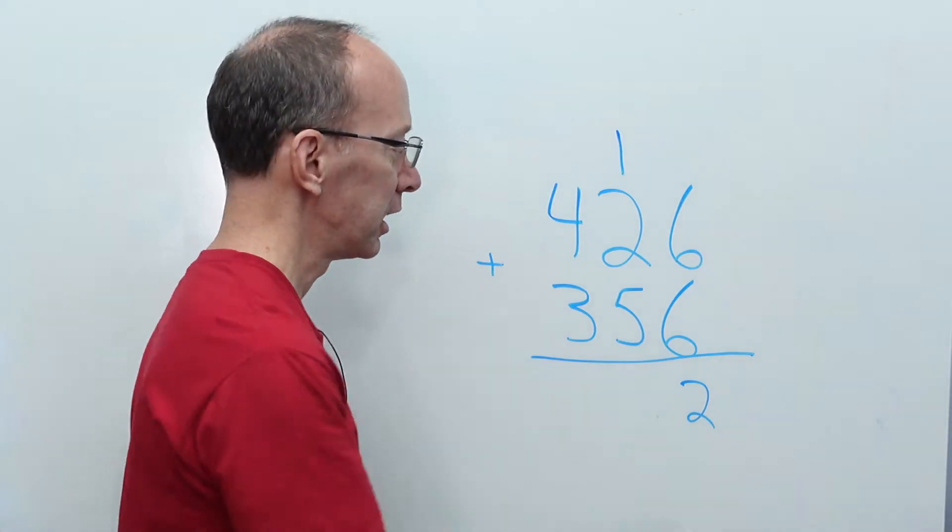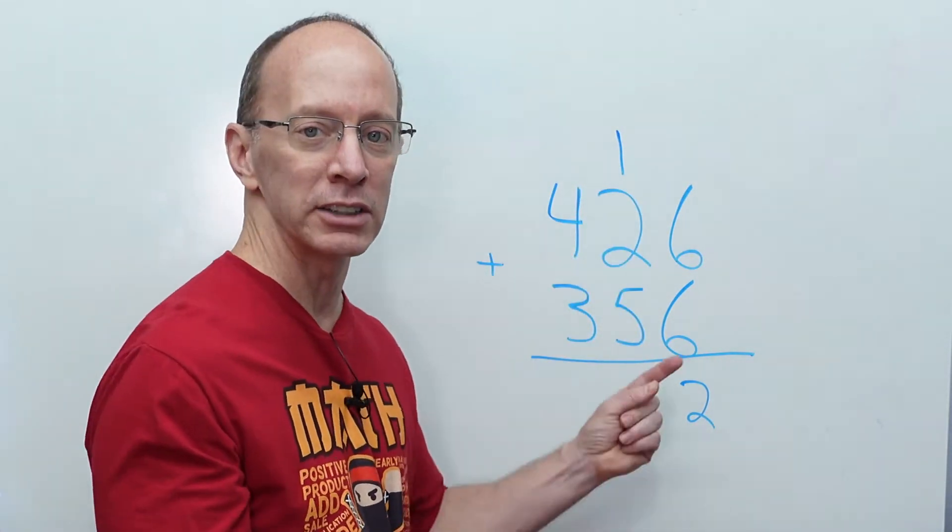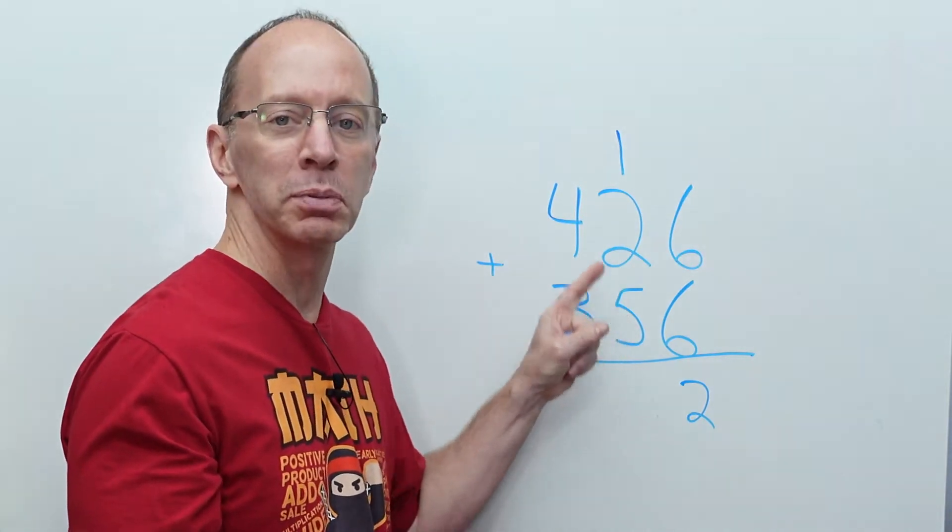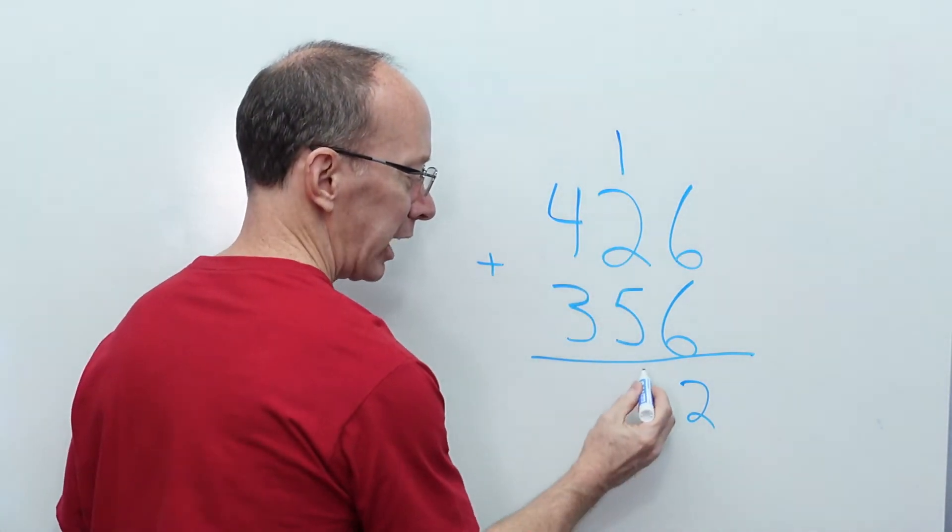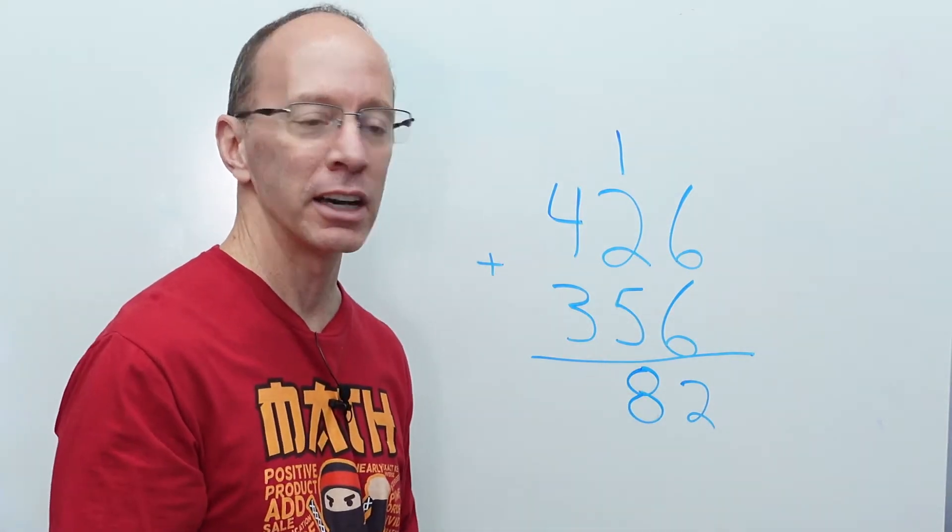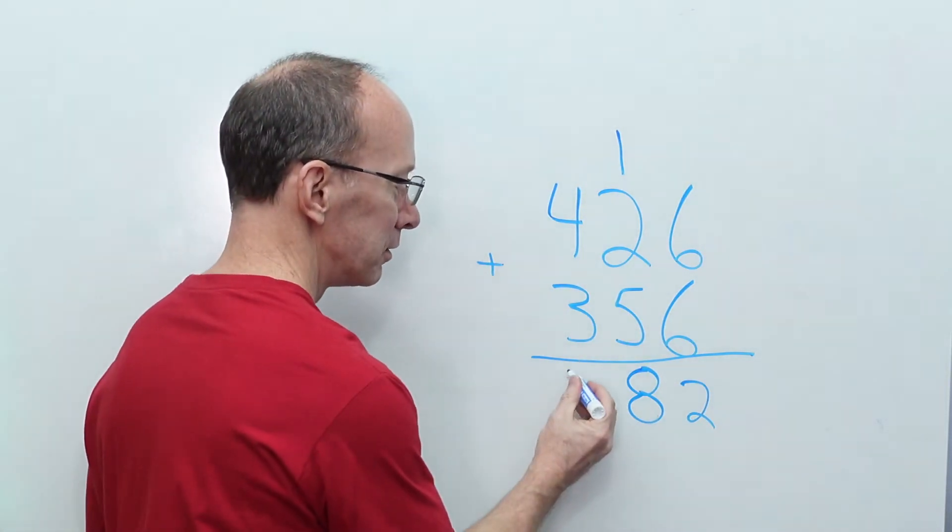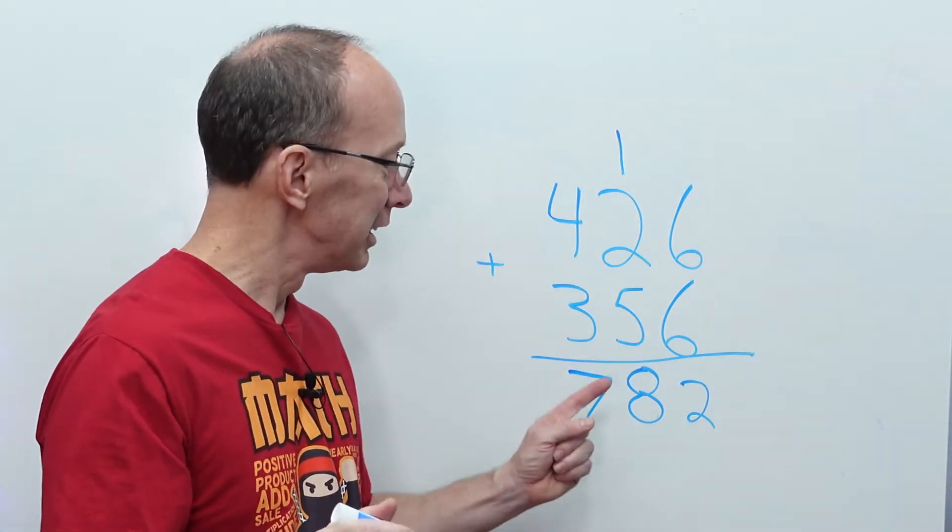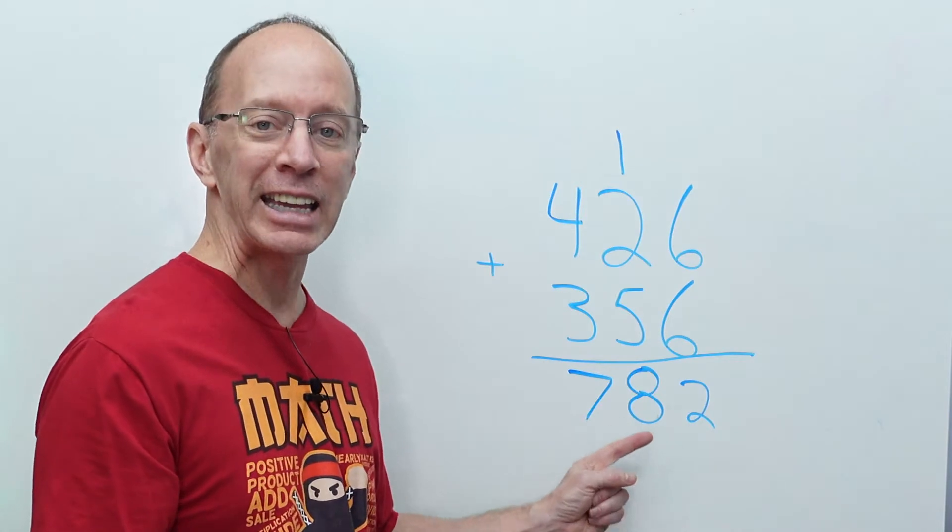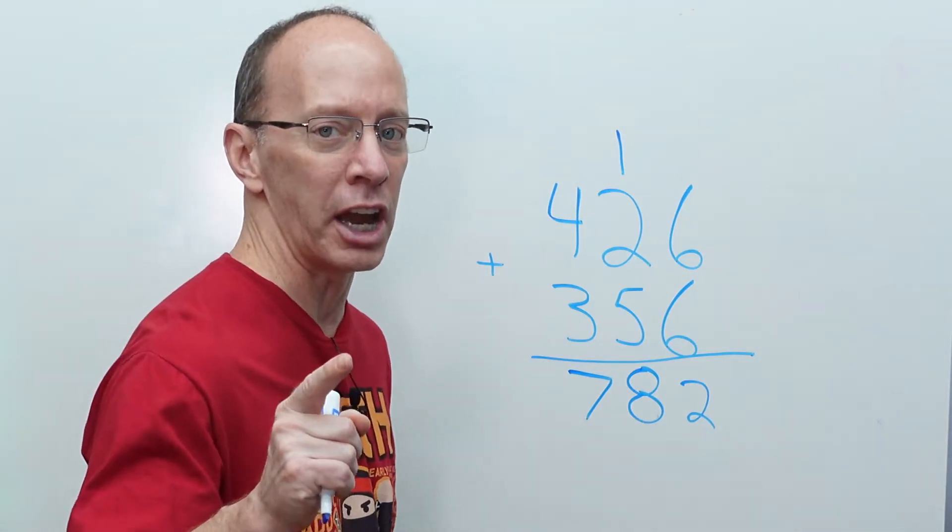Okay, now we add the tens. 5, 6, 7, 8. We have 5 plus 2 plus 1 is 8. So, put the 8 right here. Okay, now we add the hundreds. 4 plus 3. What is it? 4, 5, 6, 7. Another 7 sent from heaven. 782 is the answer. Ready to go on? I know you are. Let's do it.